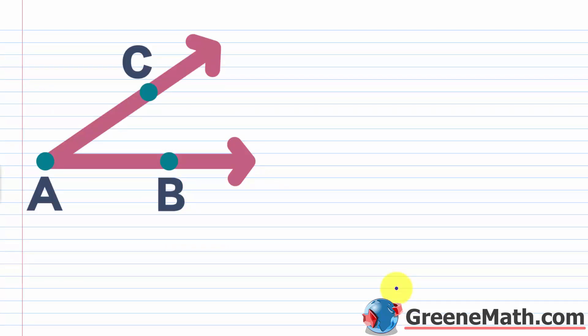Now I want to talk about an angle. Basically, an angle consists of two different rays with the same endpoint. The two rays are the sides of the angle, and the common endpoint is the vertex of the angle.